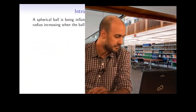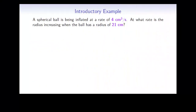In this video, we'll look at a few examples and discuss some guidelines to tackling related rates problems. Let's start with an example. A spherical ball is being inflated at a rate of 4 centimeters cubed per second. At what rate is the radius increasing when the ball has a radius of 21 centimeters?